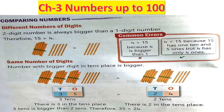Now, when both numbers have the same number of digits — say both are two-digit numbers — we look at the tens place. For example, 35 and 24: the first digits are 3 and 2. Three is bigger, so 35 is bigger than 24. Three tens is greater than two tens, therefore 35 is bigger than 24.